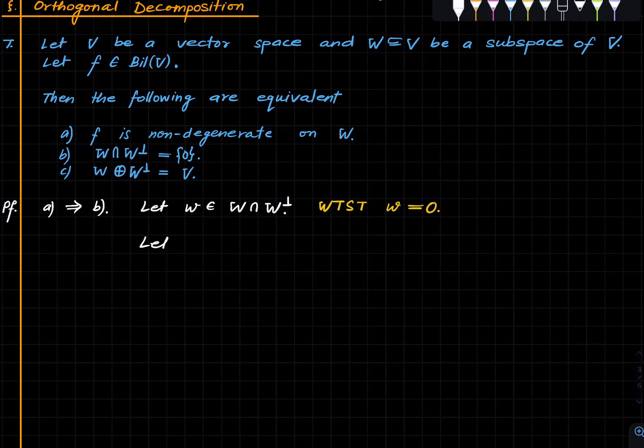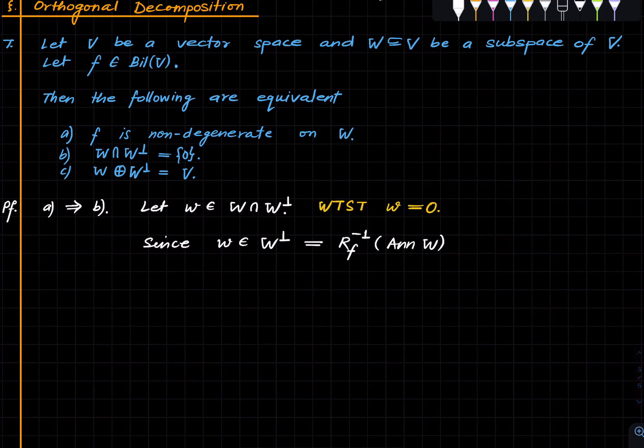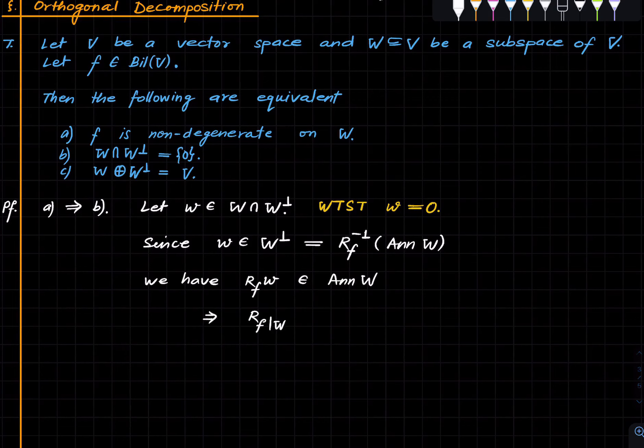Consider this guy. Since W is in W perp, and W perp as we saw in the recall is equal to this, we have R_F(W) is an annihilator of W, which implies that if you restrict F to W, then this is zero.